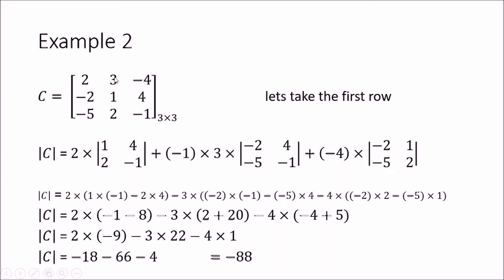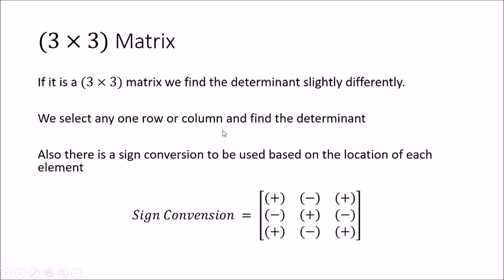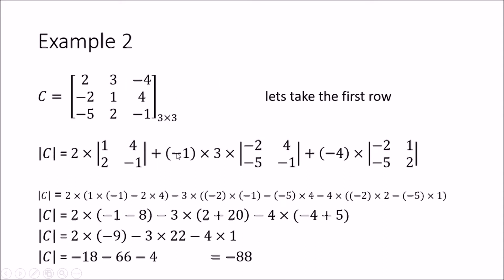Then I go to the second value, the 1,2 element. Remember, from the sign convention, the 1,2 location carries a negative value, so we put this negative sign here — that is where the minus 1 comes from. Then 3, the value in that location, is multiplied by the determinant of the remaining submatrix. We remove the first row and the second column, and we are left with four numbers: minus 2, 4, minus 5, and minus 1.